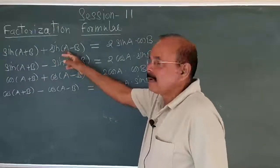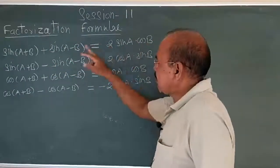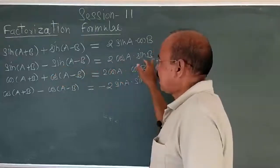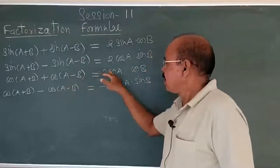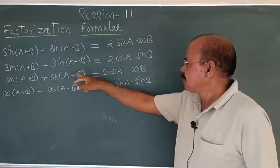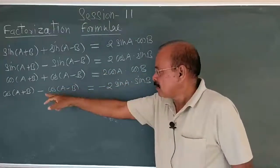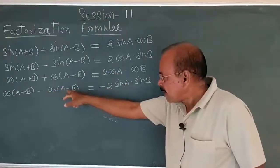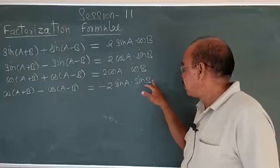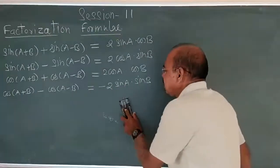The four factorization formulas are: sin A plus B plus sin A minus B equals 2 sin A cos B. Then for cos: cos A plus B plus cos A minus B equals 2 cos A cos B. And cos A plus B minus cos A minus B equals minus 2 sin A sin B.